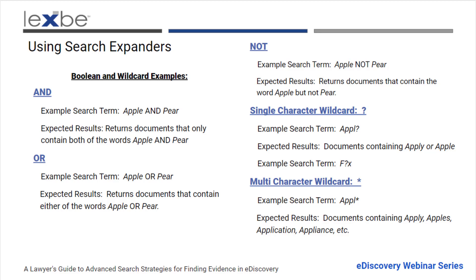Talking about wildcards — wildcards can be important for different verb endings. The single character wildcard is when you're looking for something like 'apply' or 'apple.' Those can also be used with the wildcard in the middle of a word when you're looking for something very specific. I don't see them using the single wildcard very often, but it can be helpful in certain instances. Typically what we see is the multi-character wildcard, which is the asterisk — that can be used to find any document that contains a word with specific letters and then any number of characters after that.